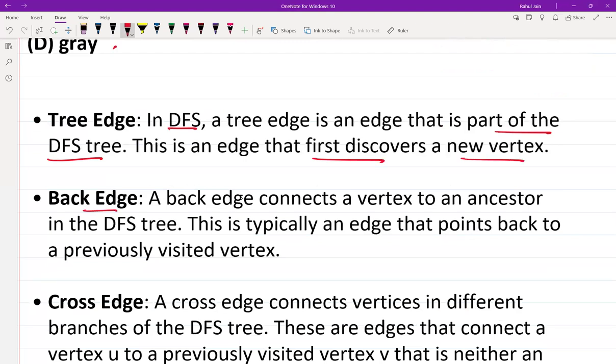Back edge connects a vertex to an ancestor in the DFS tree. This is typically an edge that points back to a previously visited vertex.